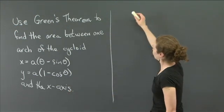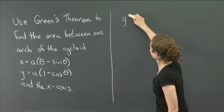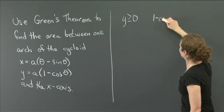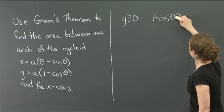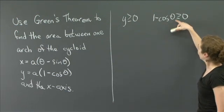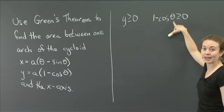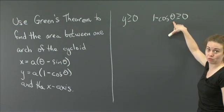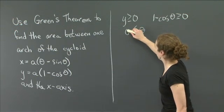If I want y ≥ 0, then I need 1 - cos θ ≥ 0. That happens for every θ from 0 to 2π. At 0 and 2π, I get 0. So we want θ to go between 0 and 2π.